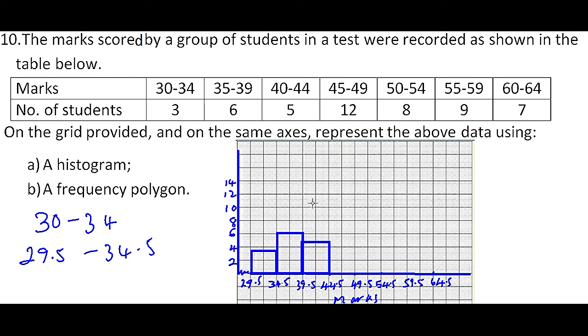Then the next one is 12. So from here we are going to draw our histogram which is 12. And then the next one is 8, so 8 will be there. So that is our histogram.